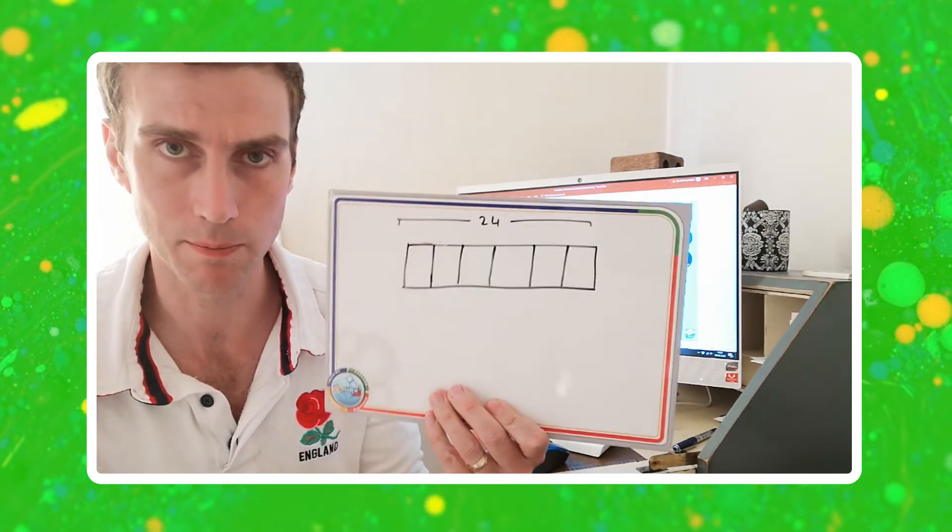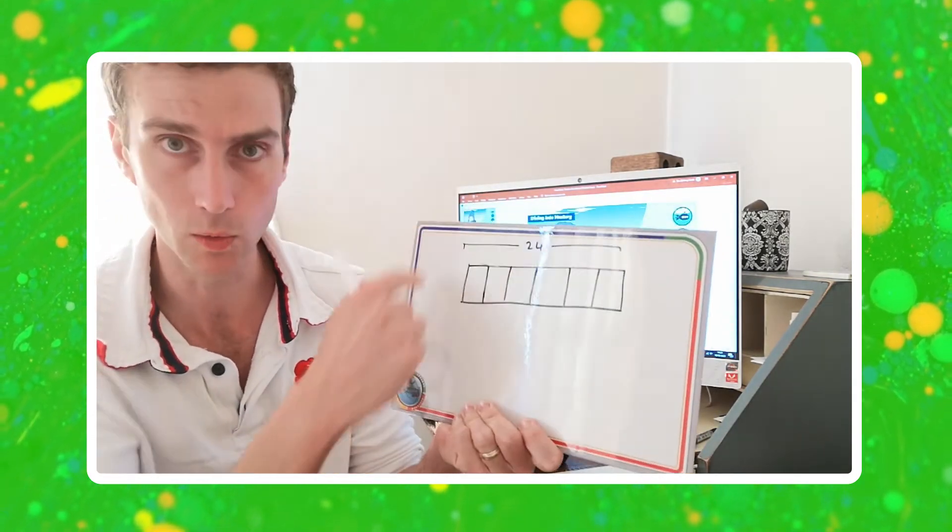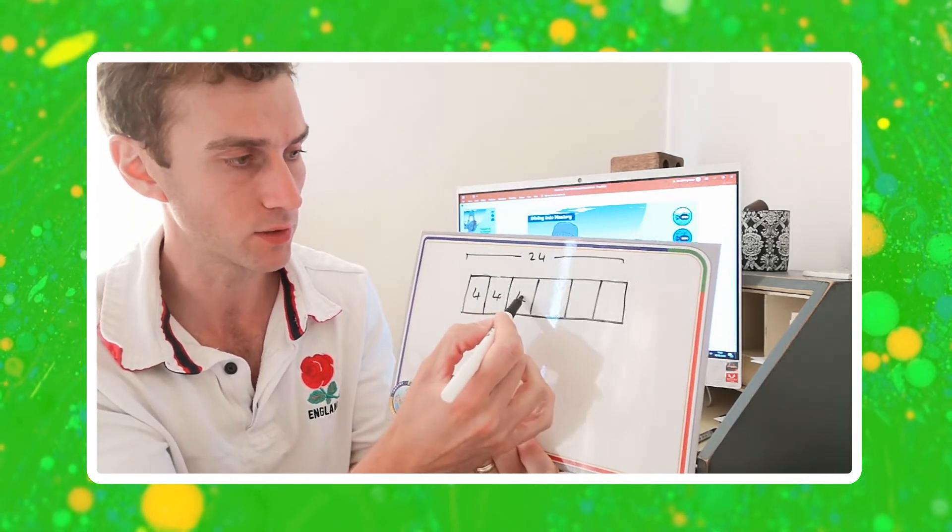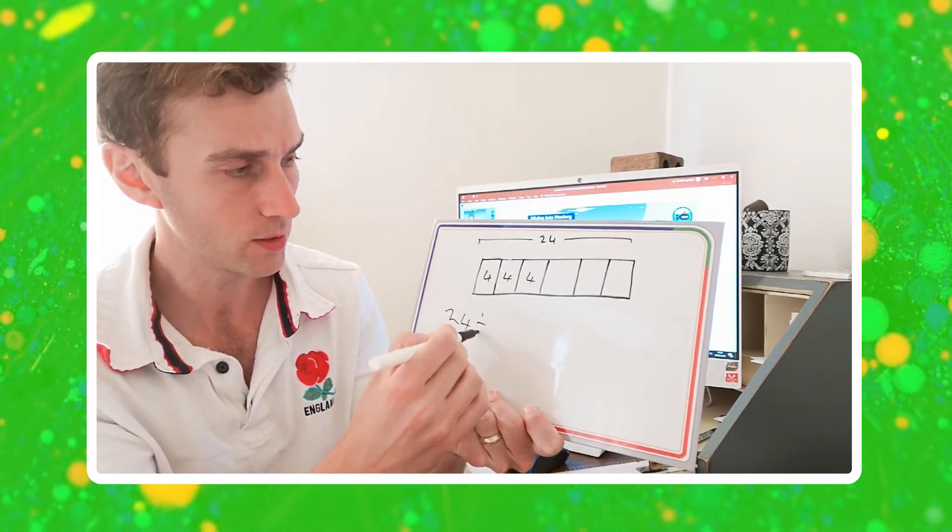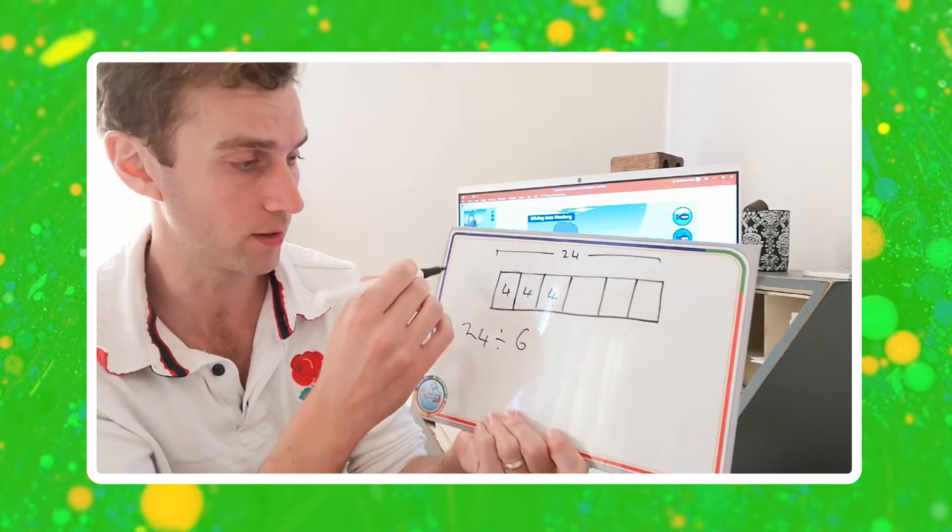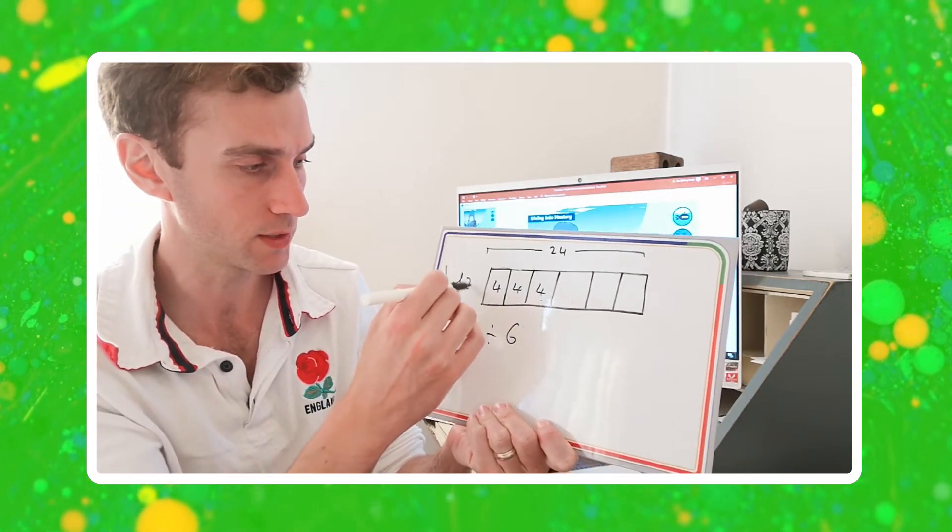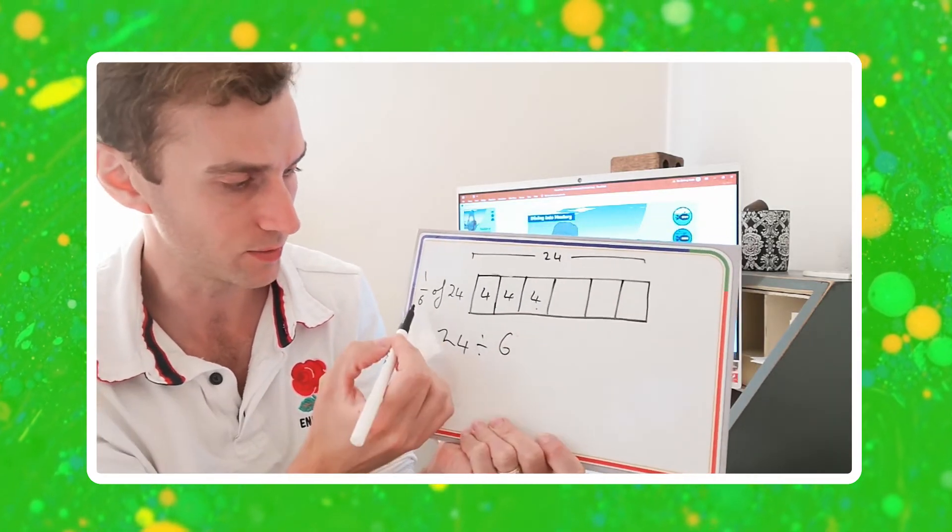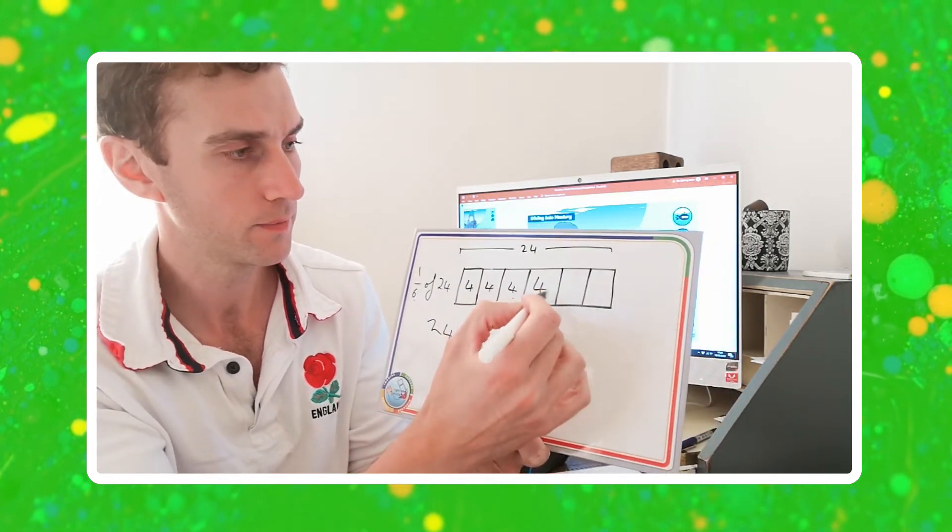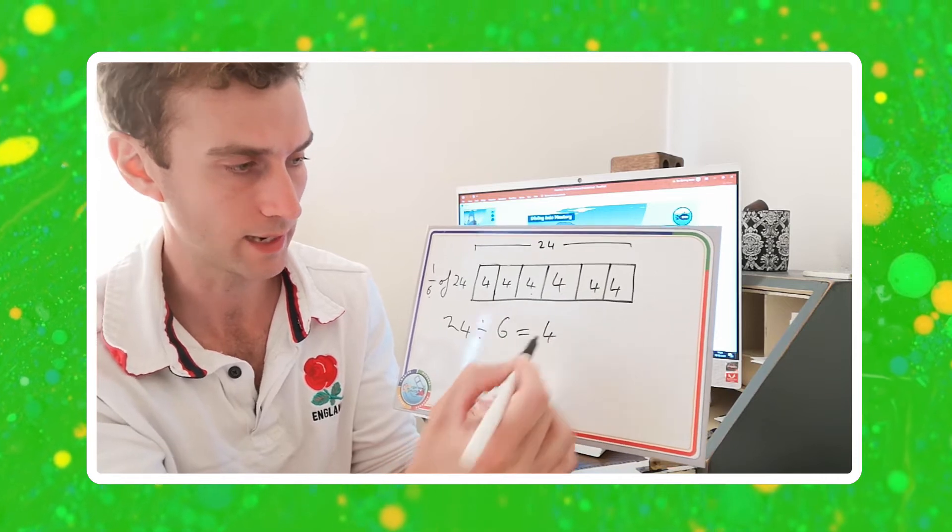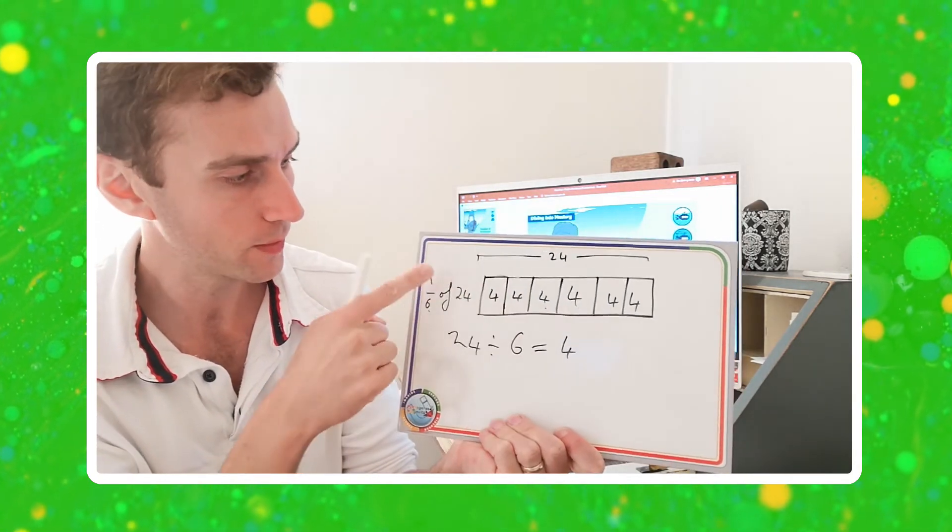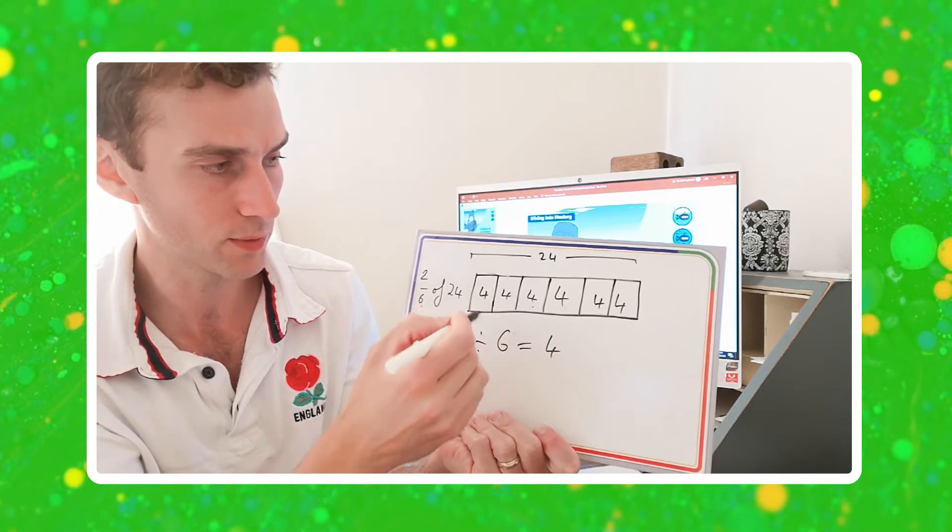Now, if you were looking at that as a bar model, if you have 24 as the whole, and we've already worked out that there's four in each group. Again, I could have done that by using more written methods like 24 divided by, counting 1, 2, 3, 4, 5, 6, divided by 6, because if you forgot, we were trying to find 1 sixth of 24. So I had to split my bar into six equal groups and share 24 into six equal groups. That gave us 4. We know that one of those six equal groups is 4. Therefore, if this changes to 2, then I would have to count 2 groups.